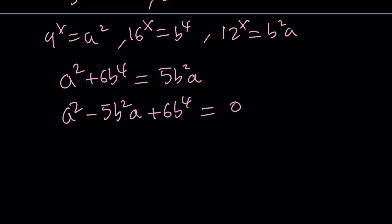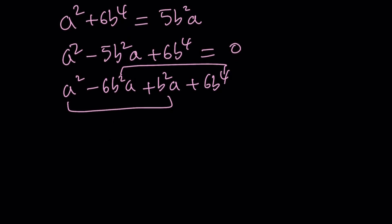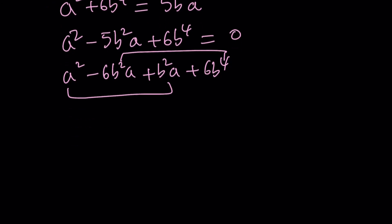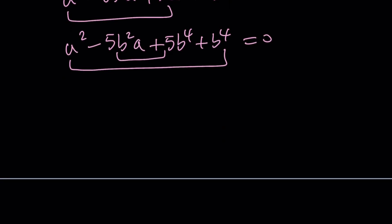This must be factorable if there are solutions. I can try to break down the negative 5 into negative 6b squared a and positive 1b squared a. Guess what? This is not going to help. You're not going to find a common factor. Or we could try breaking down the 6b to the 4th into 5b to the 4th and 1b to the 4th. Again, this will not be helpful either. So none of these works. We have to do something else.